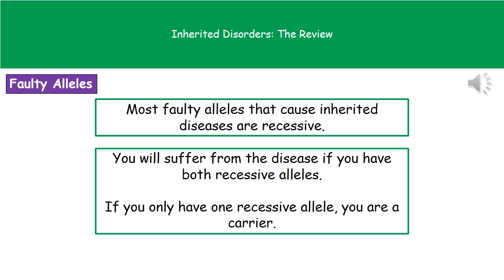Many of the faulty alleles that cause inherited diseases are recessive alleles — not all of them, but many of them. As a result, the only way you can actually suffer from the disease is if you have both recessive alleles. If you only inherit one of the recessive alleles, you become what's called a carrier — you don't show the symptoms yourself, but if you have a child with someone who is also a carrier, then your child may have the disease.